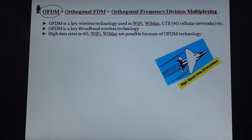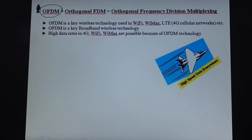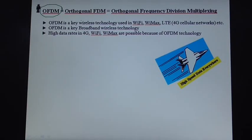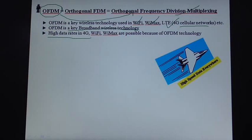Hello friends. Today I will explain about OFDM technology used in wireless communication systems. OFDM stands for Orthogonal Frequency Division Multiplexing. It is a key broadband wireless technology used in Wi-Fi, WiMAX, and 4G wireless cellular networks. High data rates in 4G, Wi-Fi, and WiMAX are possible because of OFDM technology.